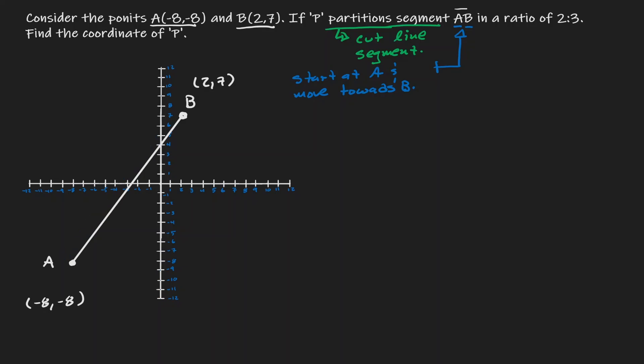Putting this together, we want to take a look at this line segment and cut it in a ratio of 2 to 3. If we want to cut this line segment in a ratio of 2 to 3, we need to cut it into 5 equivalent pieces. Let's estimate that on our line segment.